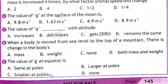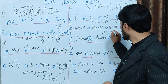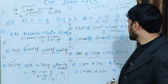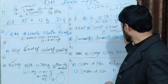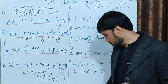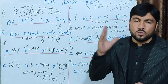MCQ 7: The value of g with increasing altitude — does it increase, decrease, become zero, or remain the same? The equation is g = GM_E / (R_E + h)², where h is the altitude. As altitude increases, the denominator increases, so g decreases. The correct option is B: decrease.